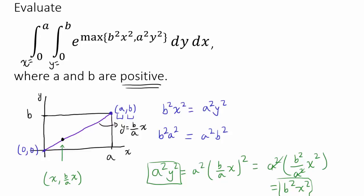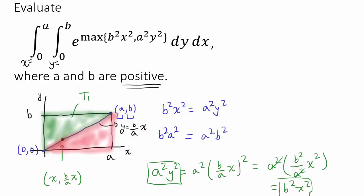So we should divide this integral into two parts: one integral over the upper triangle and one over the lower triangle, then add them up. Let's label the upper triangle T1 and the lower triangle T2.